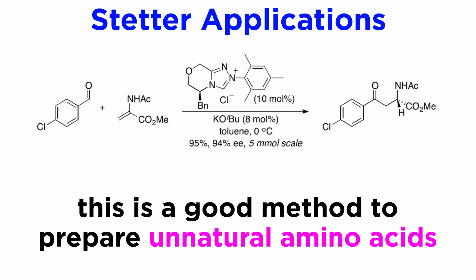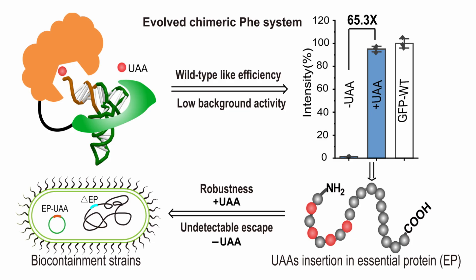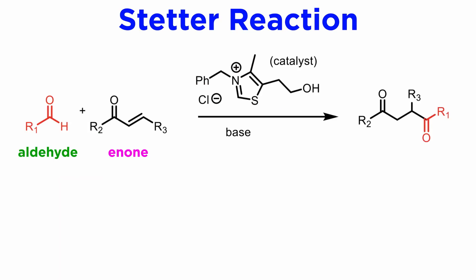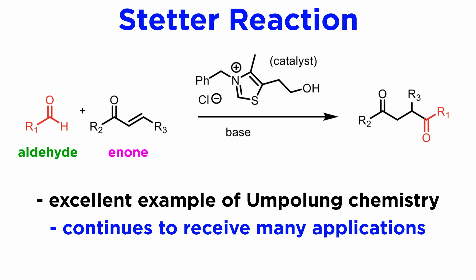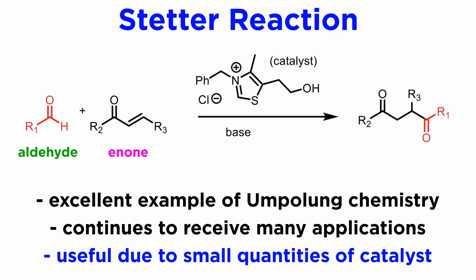This is a current hot topic in organic chemistry and biology. Scientists have been able to insert unnatural amino acids into bacterial proteins, and have actually designed new bacteria that can feed and replicate while making unnatural proteins — essentially semi-synthetic bacteria with new designed functions. Let's conclude by saying that the Stetter reaction is a great way to reverse polarity in organic chemistry, and it continues to receive hundreds of applications since it was invented, especially since it uses only a catalytic amount of the chiral inducer. This is a very current name reaction that any organic chemist must know.